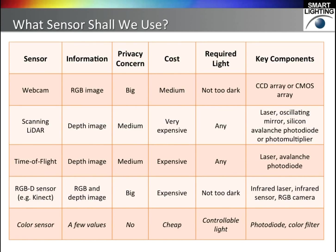What sensor shall we use? We may naturally think of cameras or other imaging devices. But do we really need a human-readable image? The answer is no. We just need to know which part of the room is occupied. We don't need to see your arms or your necks. If we can see, that is actually a problem, because someone else can hack into your camera network. You are exposed to the cameras, and we will have no privacy.